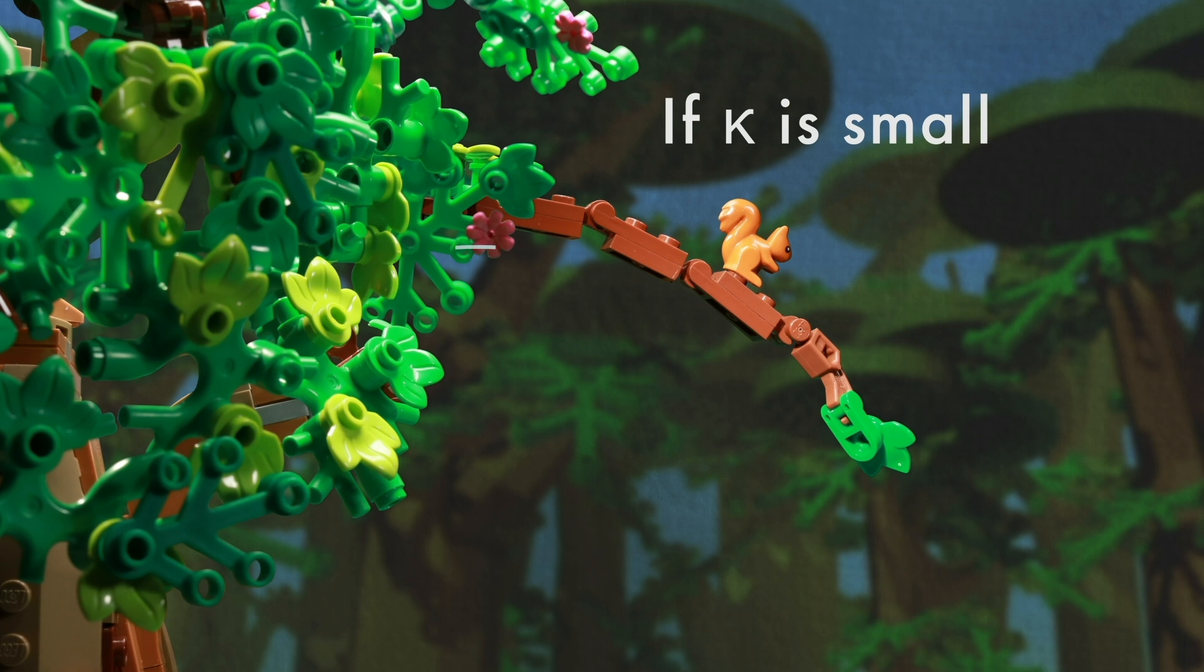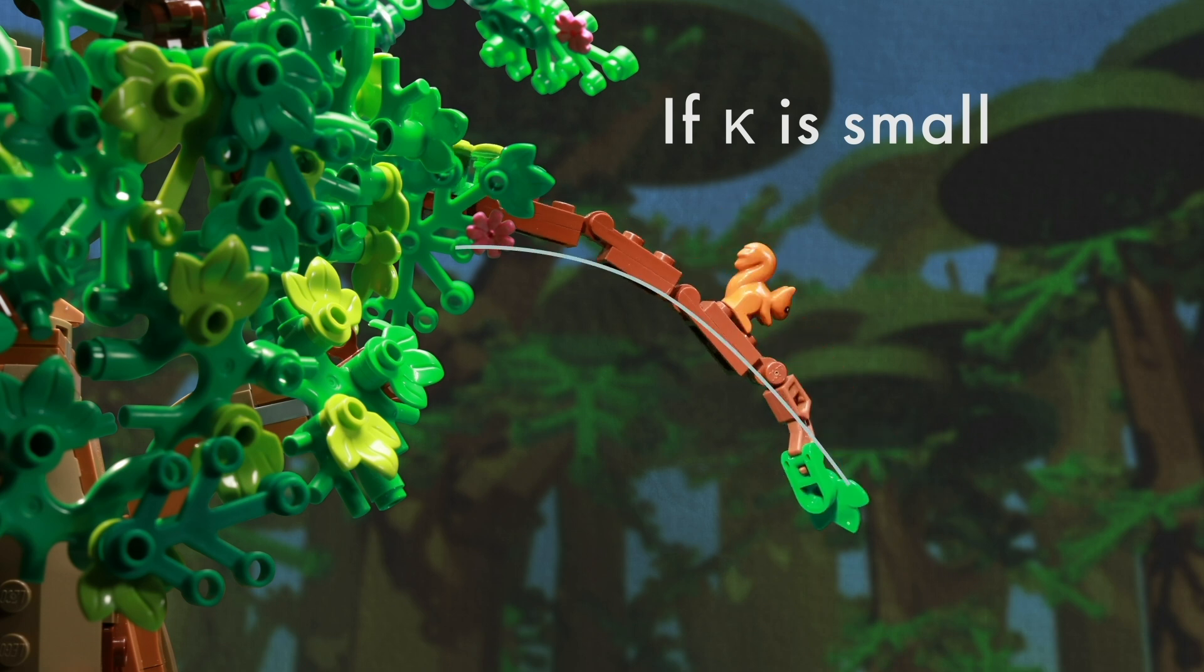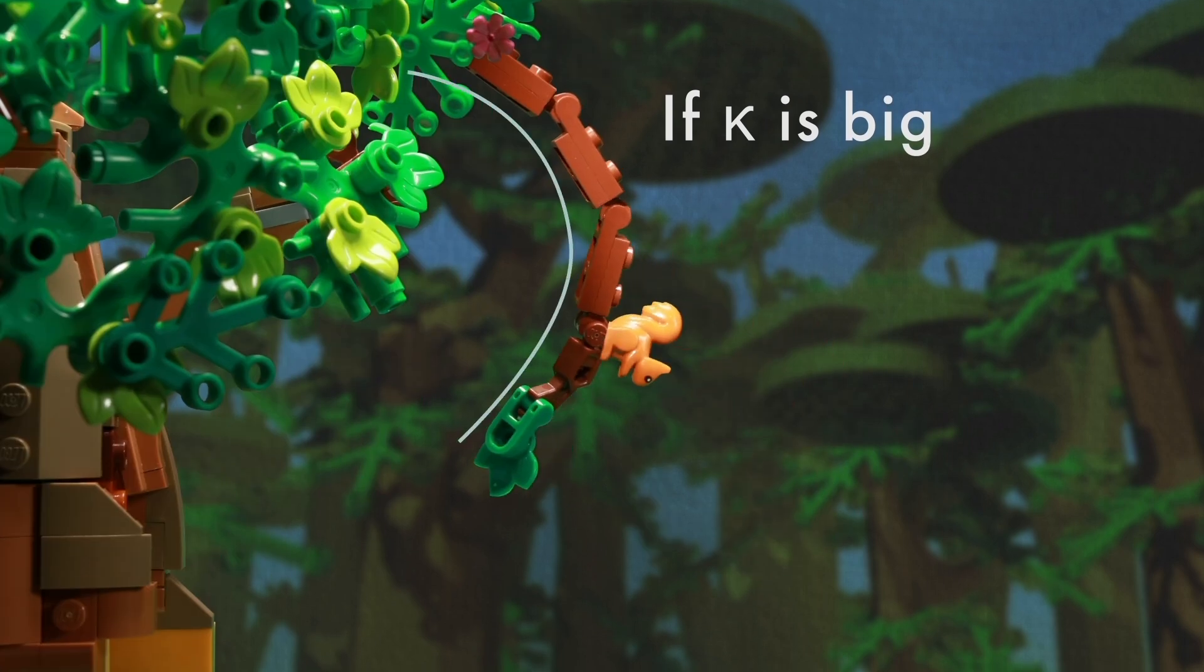If kappa is small, the curve deviates a little bit from a straight line. If kappa is big, the curve bends a lot more.